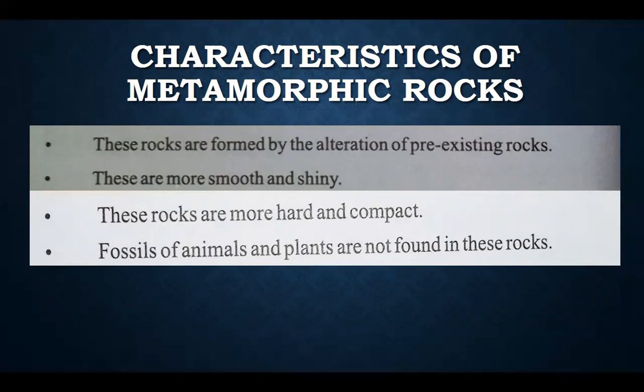The fourth characteristic is that fossils of animals and plants are not found in these rocks. Fossils of animals and plants are not found in metamorphic rocks — fossils are only found in sedimentary rocks.